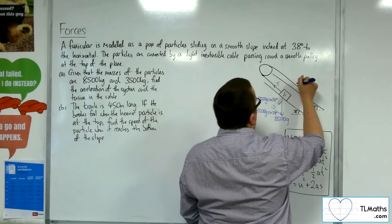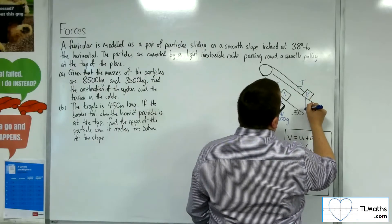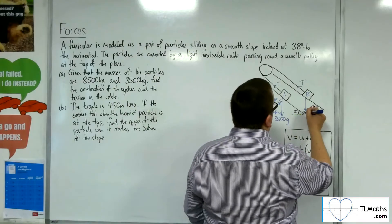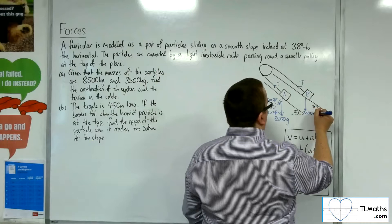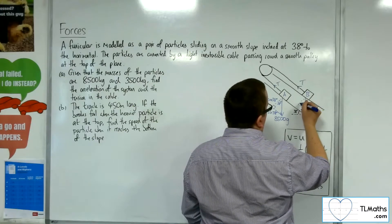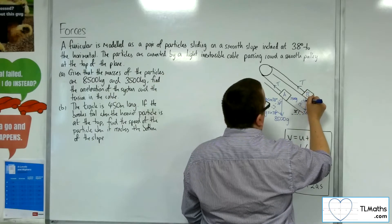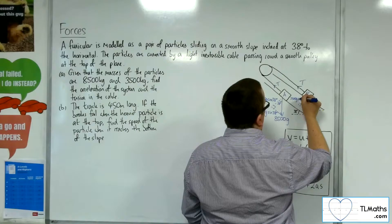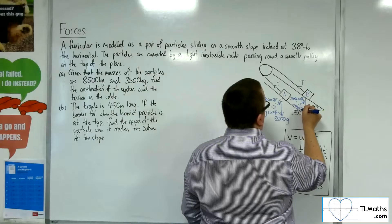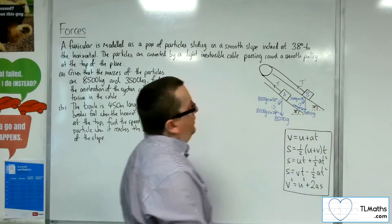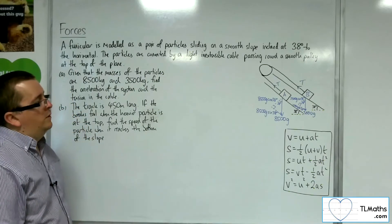There will be tension in the cable for both particles. Particle B has a mass of 3,500 kilos, so a weight of 3,500G. Breaking that apart as well, we get 3,500G cosine 38 for the adjacent side and 3,500G sine 38 for the opposite side.